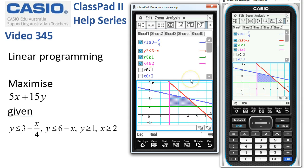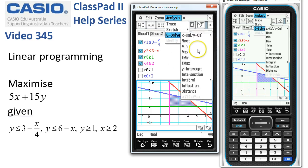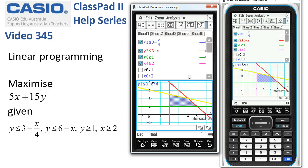So to do this with multiple lines selected, it's always a bit of a nuisance, but here we go. We'll choose analysis, g-solve, and intersection, and ClassPad indicates which line is the currently selected one.